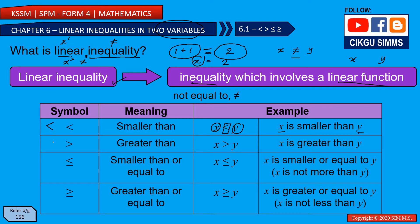The second symbol is 'greater than,' so x is greater than y. You might get confused, but there are two signs because they differ only in direction. The open side must be big — so y is the bigger number in 'x < y,' and x is the bigger number when the open side faces x. Just remember: the open side is big and the pointed side is small.